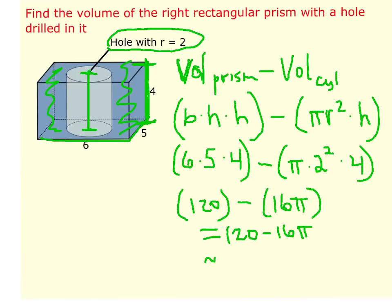So if it asked to stay as an exact answer, we would just leave it as 120 minus 16π. If you want to put that in your calculator and approximate it, you would get about 69.7. And again, both of these should be labeled with cubic units. So just again, remember that this is the exact answer. And this one here would be the approximate answer.